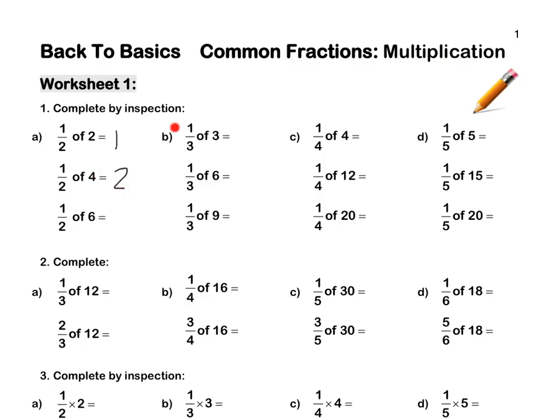Let's look at B together. A third of 3 is 1, because 3 divided by 3 is 1. A third of 6 is 2, because 6 divided by 3 is 2. Lastly, a third of 9 is 3, because 9 divided by 3 is 3.